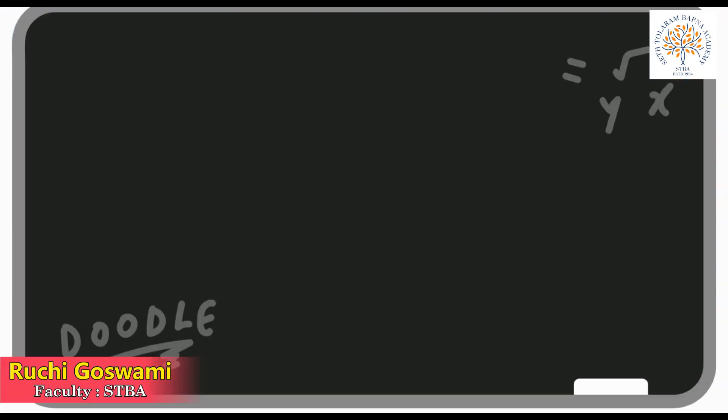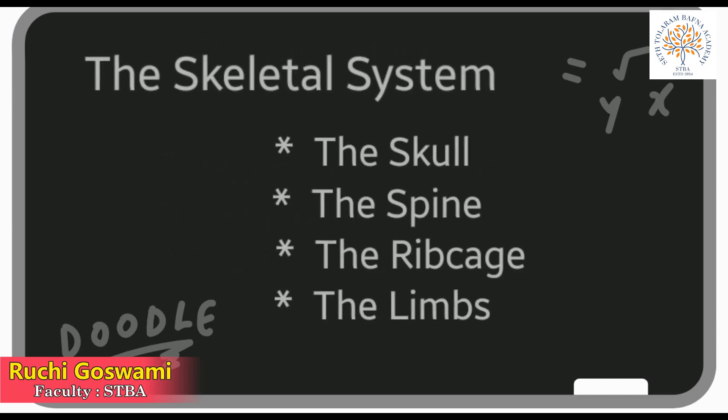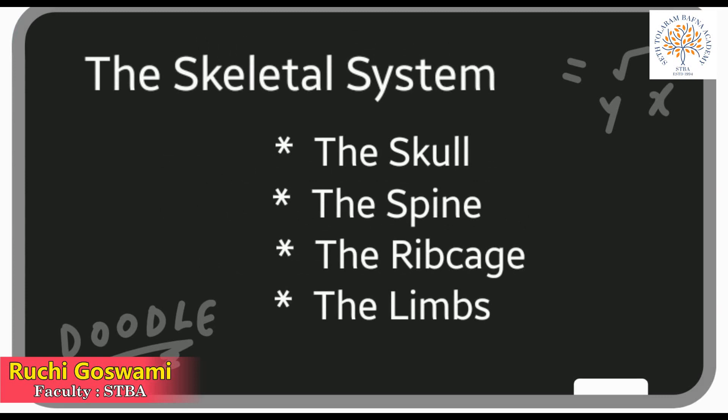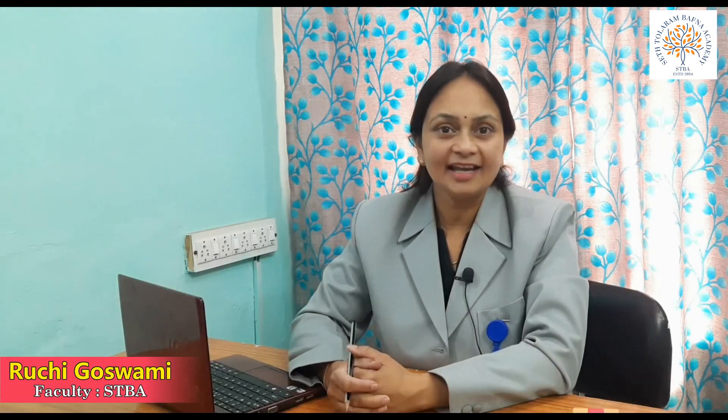Before ending the session, let's revise what we have learned today. We have learned about three systems of the human body, four parts of the skeletal system, and the three types of joints. In the next session, we will learn about the muscular system and the central nervous system. Till then, take care and keep learning. Thank you.